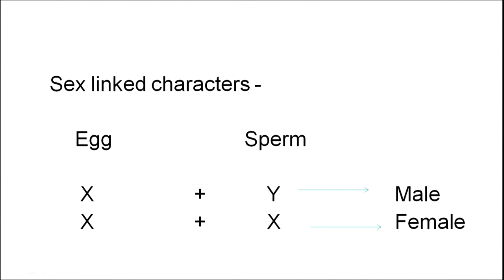How the sex is determined in a male or female child depends upon the type of sex chromosome which the sperm contains. If the sperm contains a Y chromosome and it fertilizes the egg, then the child produced is a male having XY chromosome as the 23rd pair. If the sperm contains an X chromosome and fertilizes the egg, then the child will be a female having XX chromosome.